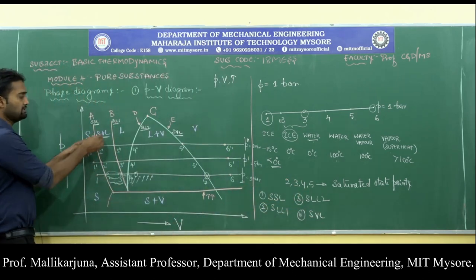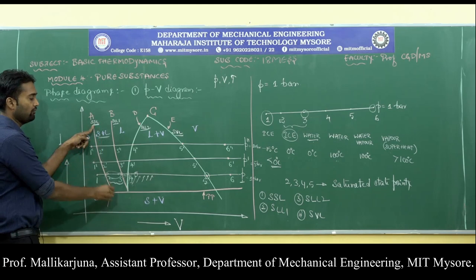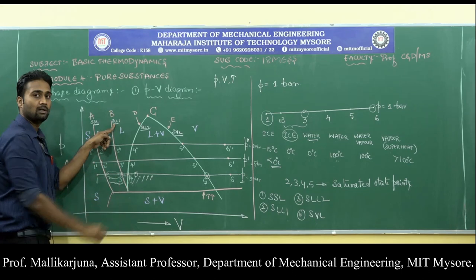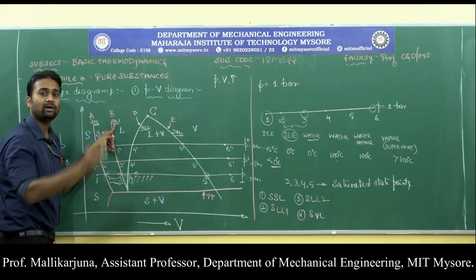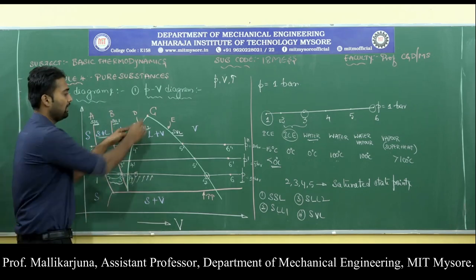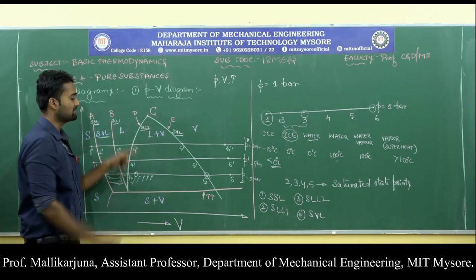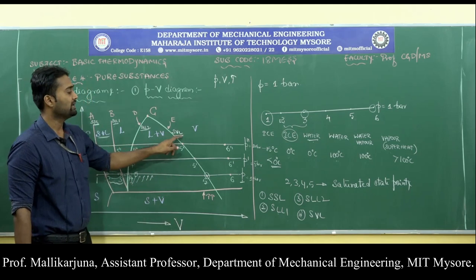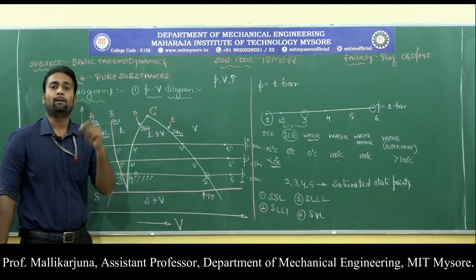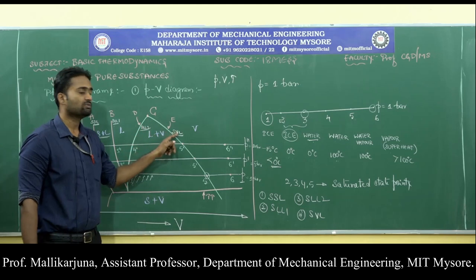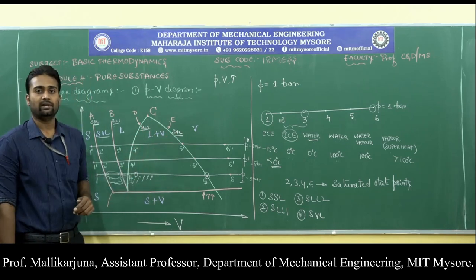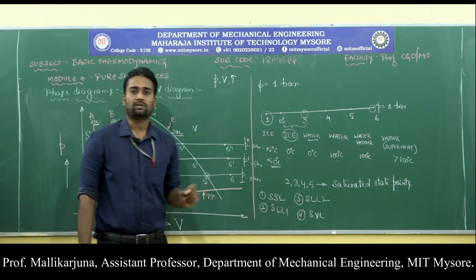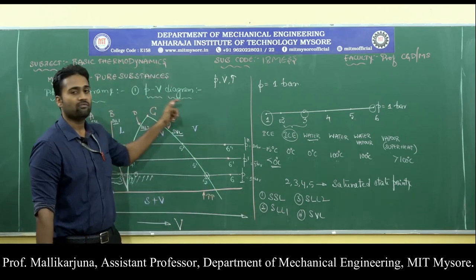To summarize all four lines: the saturated solid line is where the substance is completely solid; saturated liquid line 1 is where the substance is completely liquid at its lowest temperature; saturated liquid line 2 is where the substance is completely liquid at its maximum temperature; and the saturated vapor line is where the substance is completely vapor. These are the four saturated lines with respect to the PV diagram.